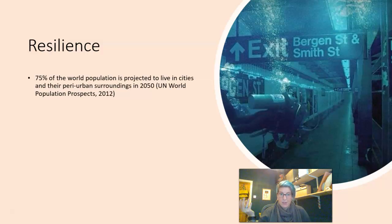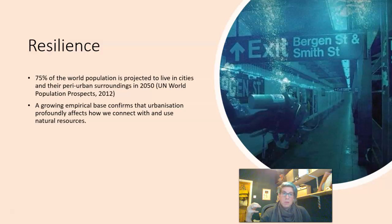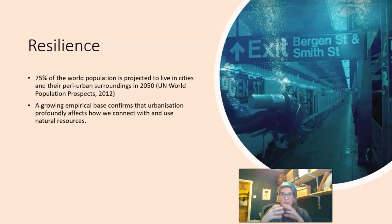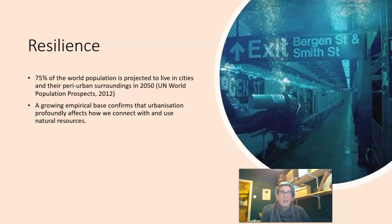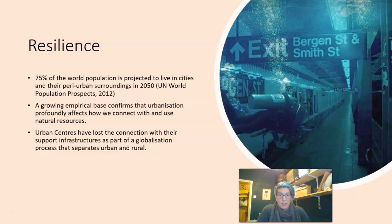Therefore we have to think of ourselves as a predominantly urban species. The way we live in cities is the way we're going to be living in the future, so we have to make cities more sustainable and more resilient. One of the problems captured empirically in research is that living in an urban area profoundly changes how we connect and think about natural resources and the natural environment. We are often cut off from those complex supply chains that give us everything we need in terms of food, fibre, energy and shelter, but of course cities are entirely dependent upon those supply chains.